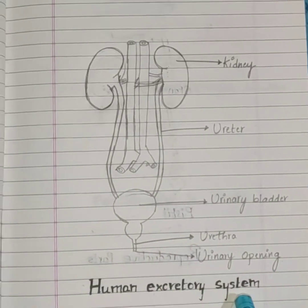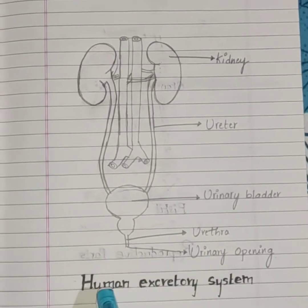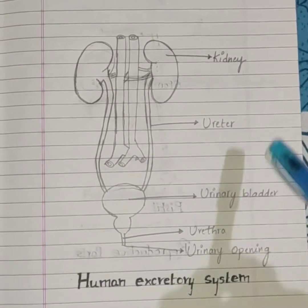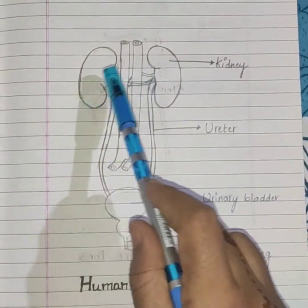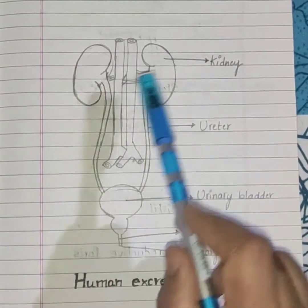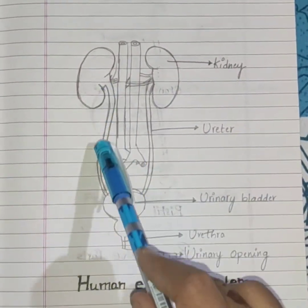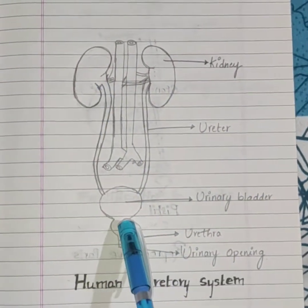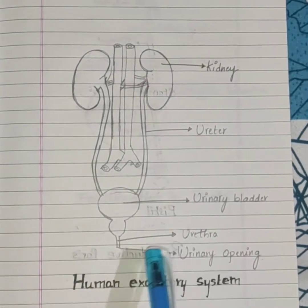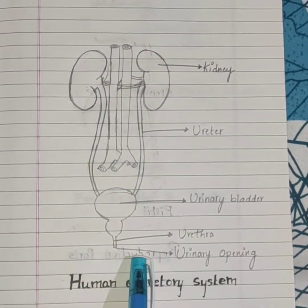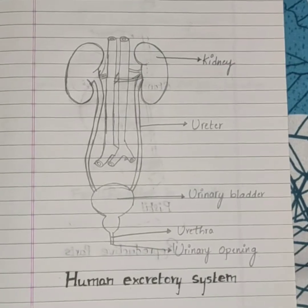Human excretory system. This human excretory system involves kidneys — both are the kidneys. Ureter — these are the ureters. This is urinary bladder. Urethra and this is the urinary opening.